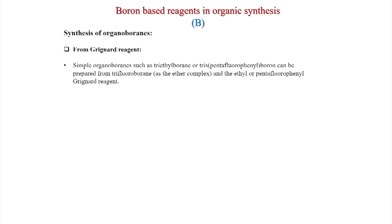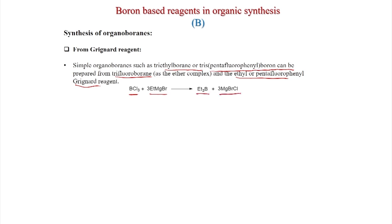From Grignard reagents you can prepare simple organoboranes. Triethyl borane or tris(pentafluorophenyl)boron can be prepared from trifluoroborane ether complex and the ethyl or pentafluorophenyl Grignard reagent. Using BCl3 (trichloroborane) with 3 equivalents of ethylmagnesium bromide, three ethyl groups come to the boron and you get the boron reagent plus 3 MgBrCl. Similarly, BCl3 reacted with pentafluorophenylmagnesium bromide (3 equivalents) gives tris(pentafluorophenyl)boron plus 3 MgBrCl.